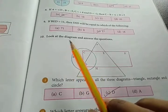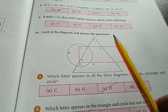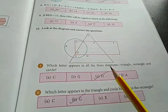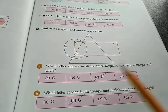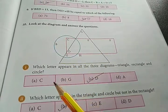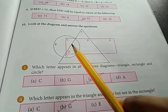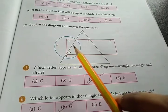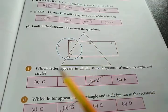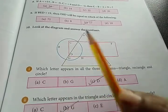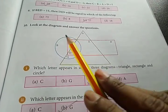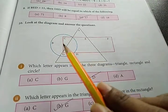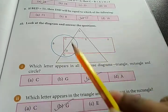Then question number 10, look at the diagram and answer the question. Which letter appears in all the three diagrams - triangle, rectangle and circle? Look, C is in the circle and rectangle, but not in the triangle. So it's D. Look, D is in the circle, in the triangle, and in the rectangle too. So D is the correct answer.